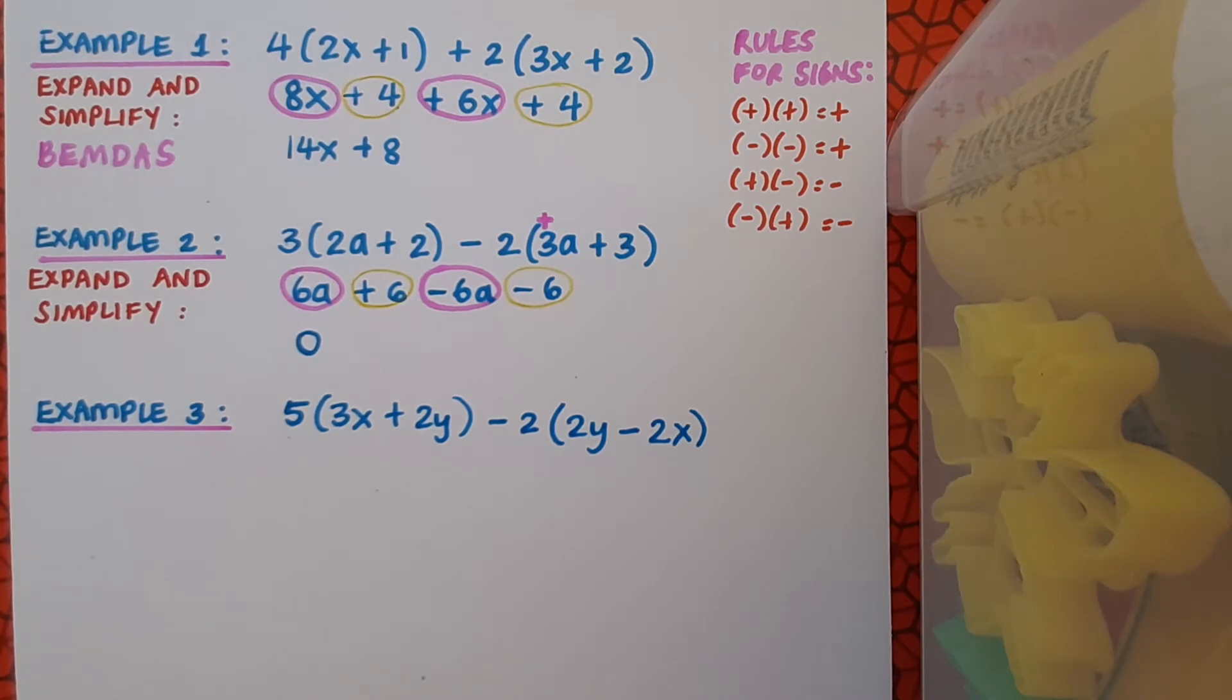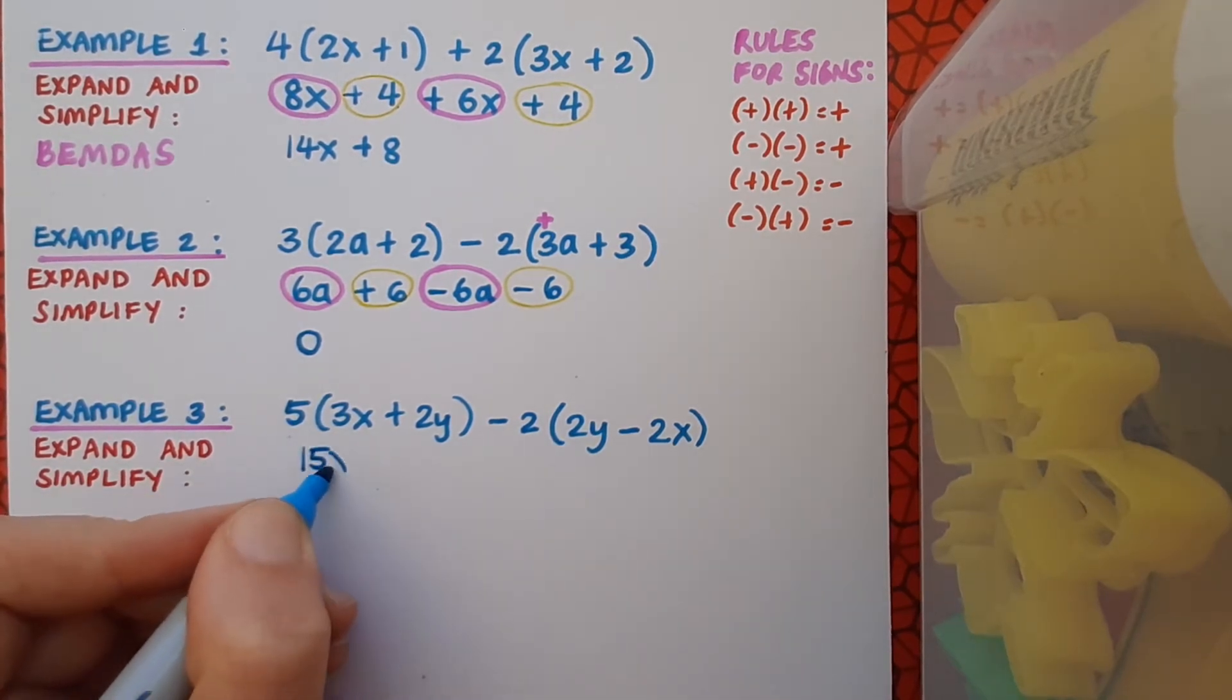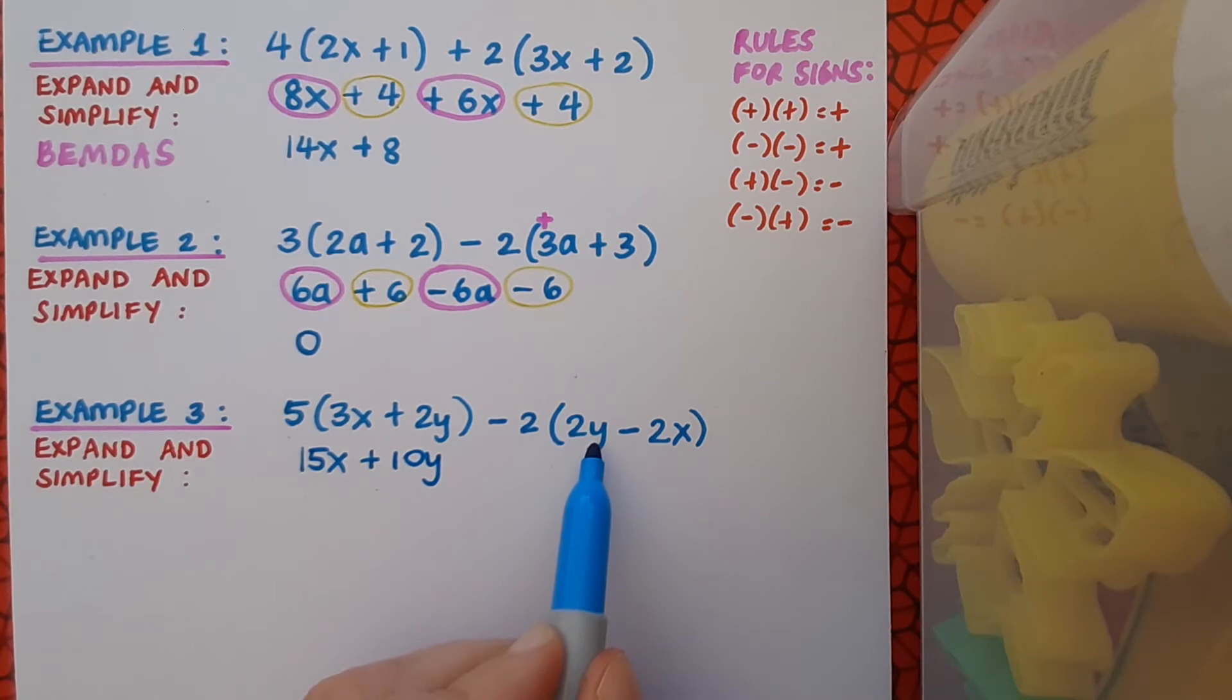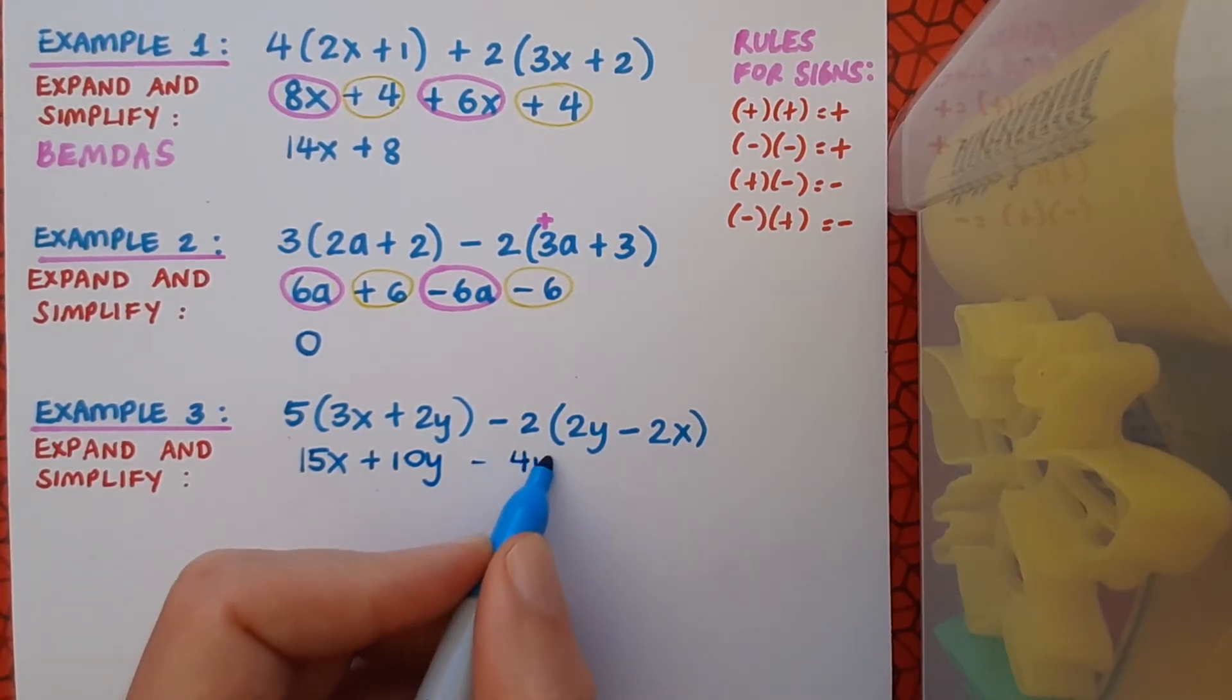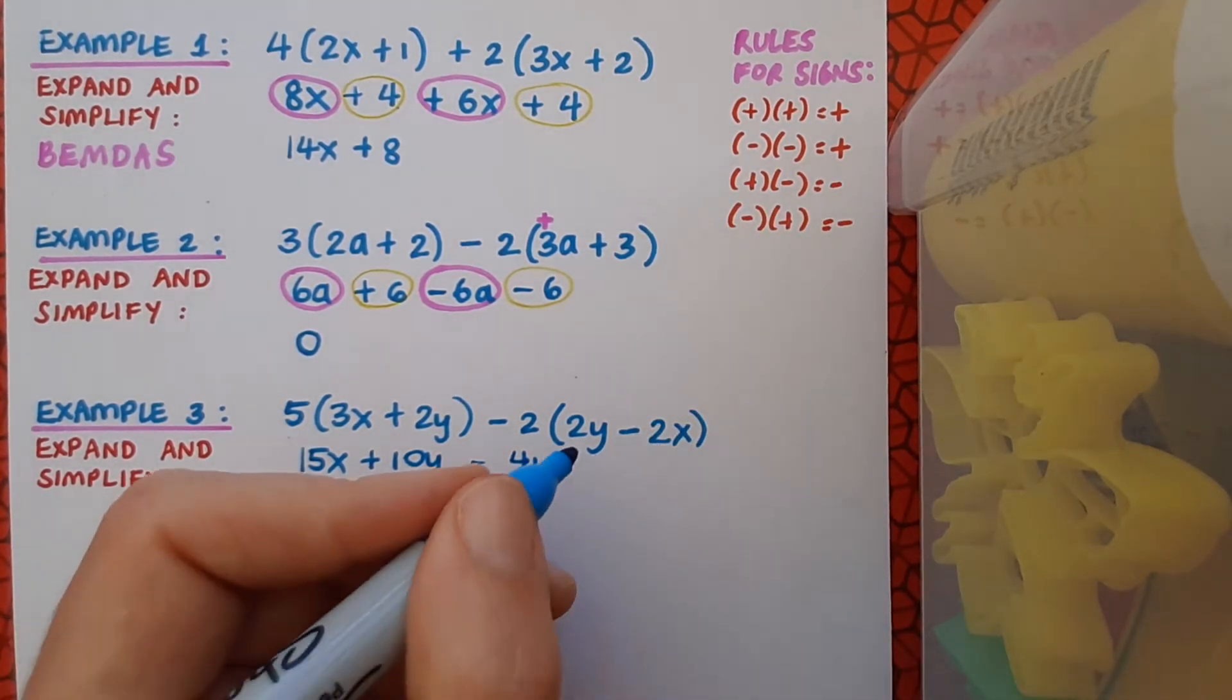Here's a third example. I've got 5(3x+2y) - 2(2y-2x). Again, I want to expand and simplify. Take a moment to write this example down, pause the video, try and do it yourself, keeping an eye on signs. Multiplication first: 5 by 3x gives me 15x. 5 by plus 2y gives me plus 10y. Minus 2 by 2y gives me minus 4y. And then finally, minus 2 by minus 2x, well, a minus by a minus makes a plus. So that's going to give me plus 4x.